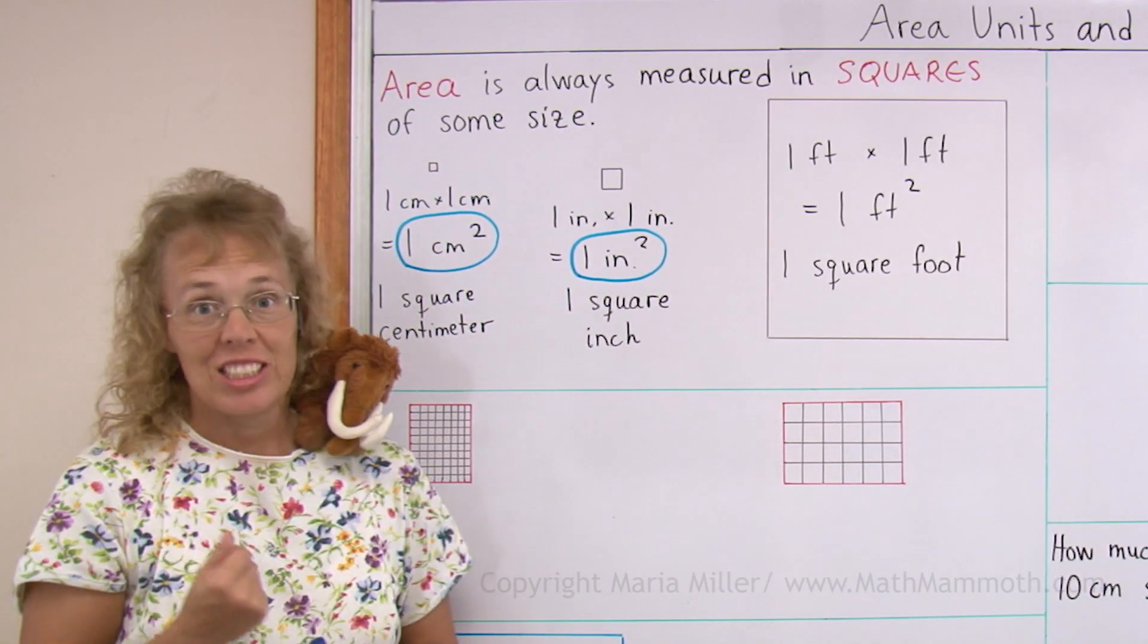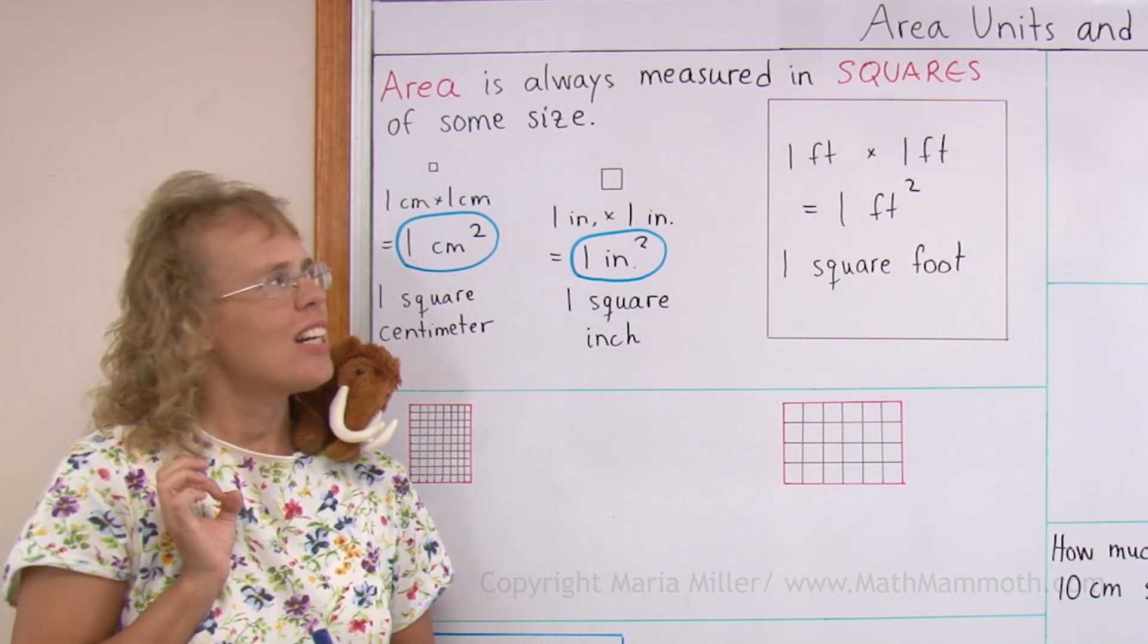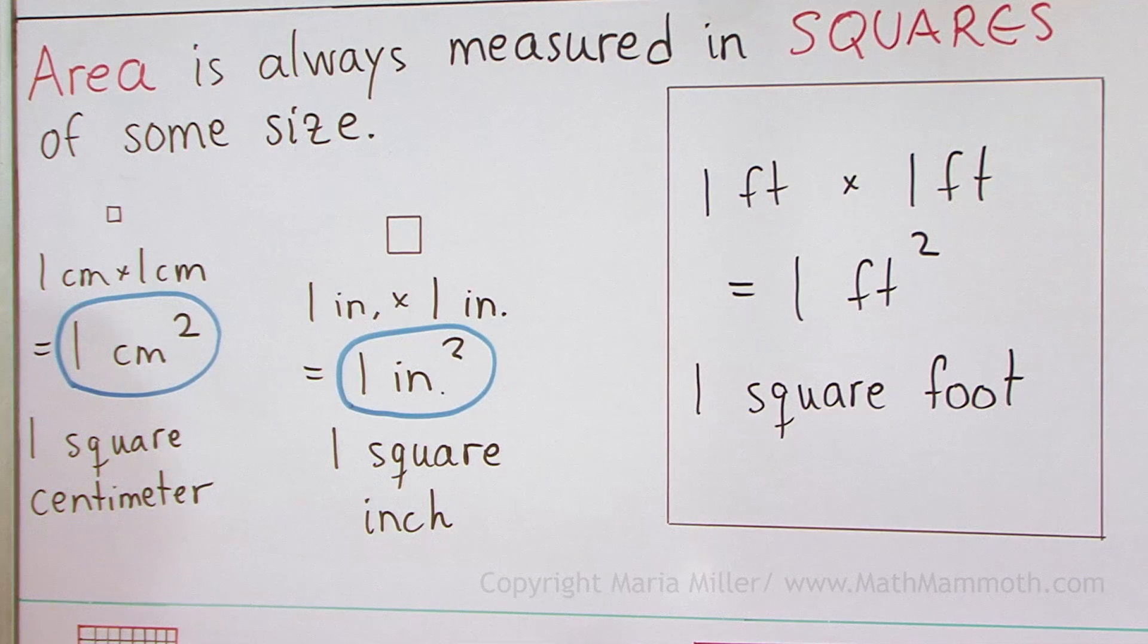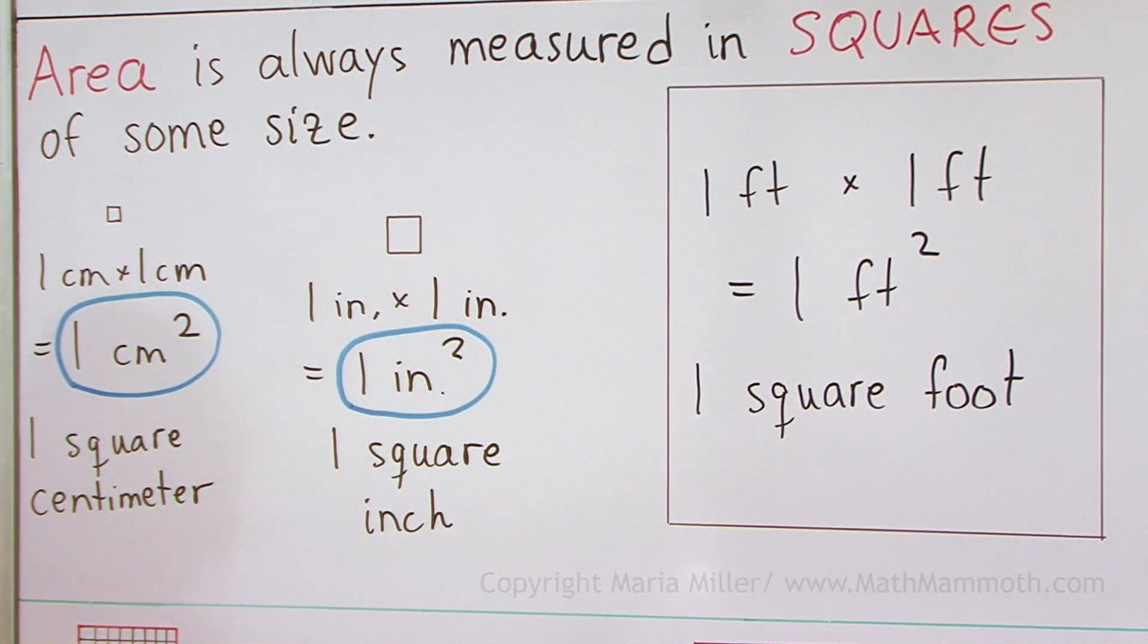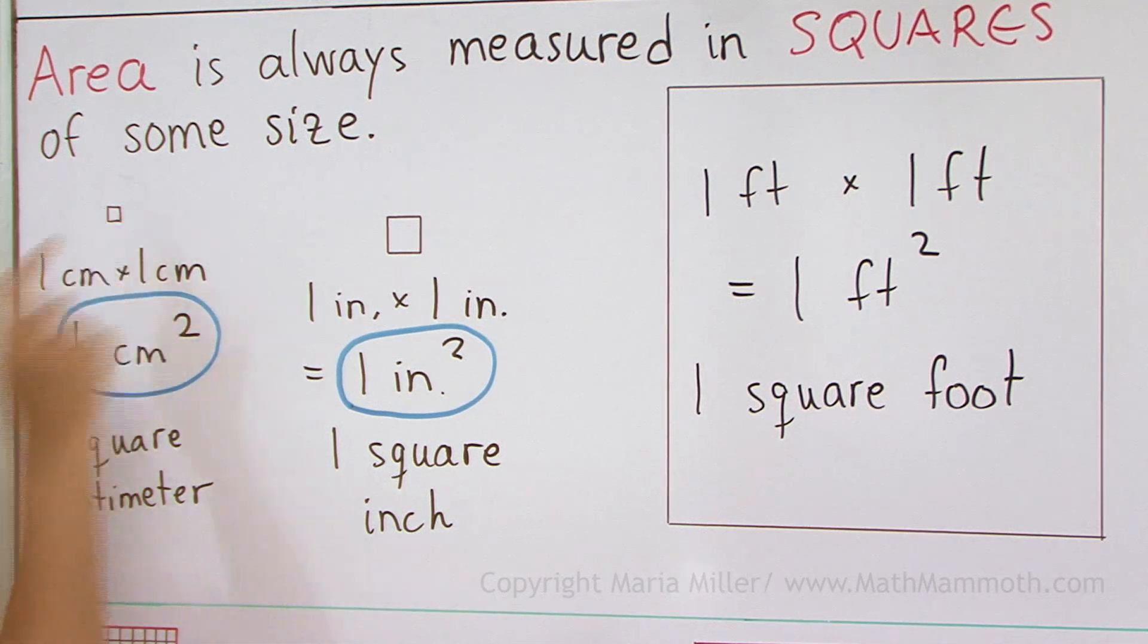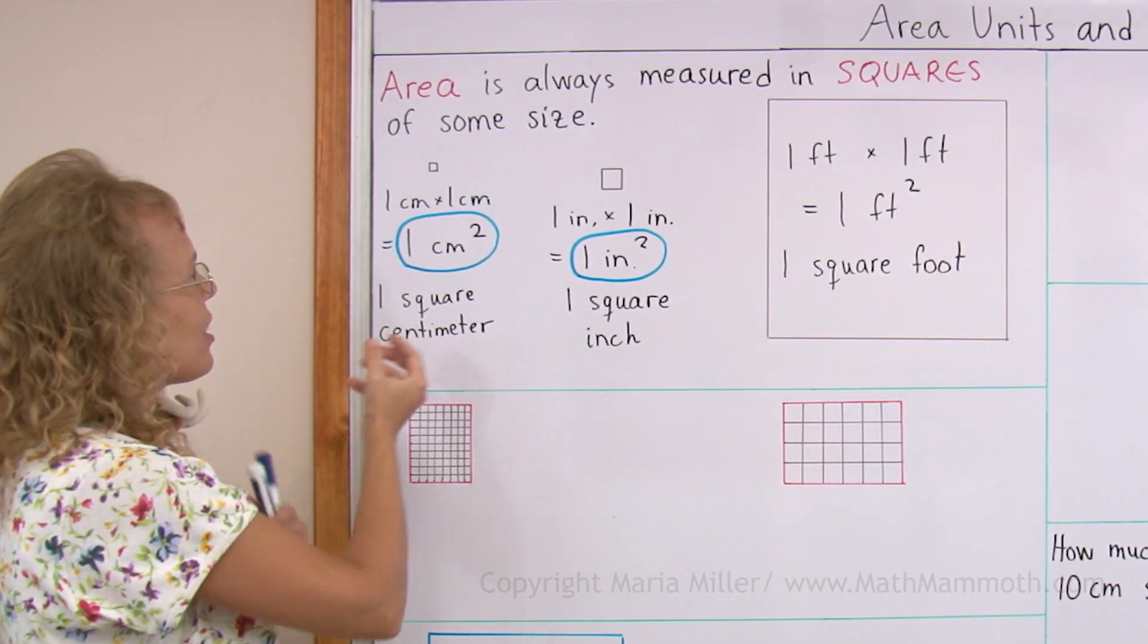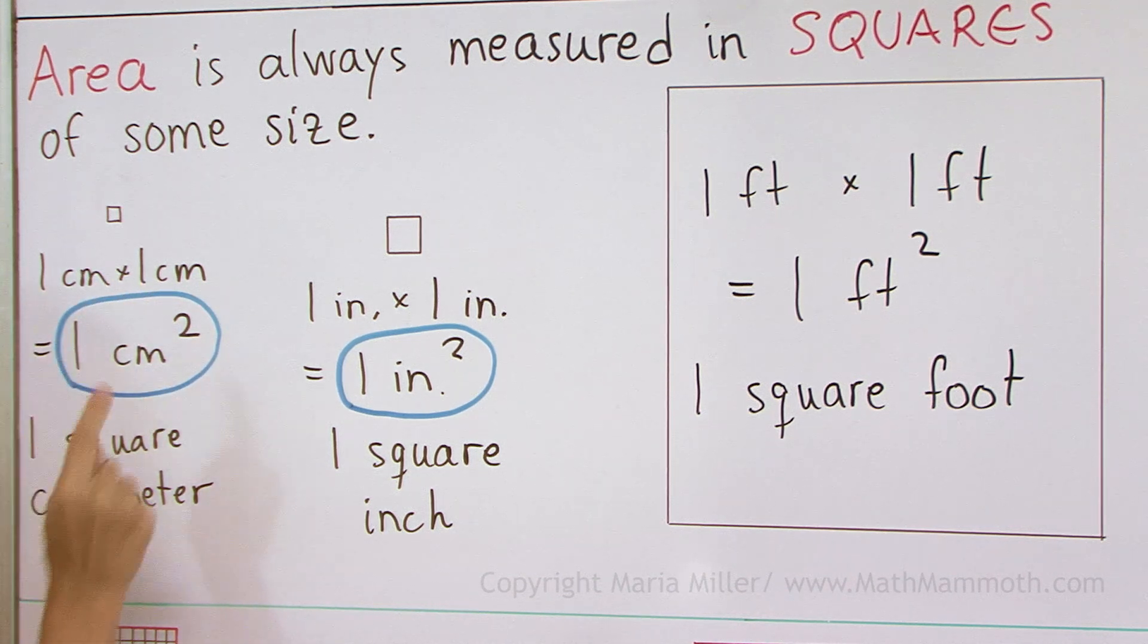Area is always measured in squares of some size. Here I drew some special squares that we often use in measuring area. This first little one is a square centimeter. It means that each side of that square is one centimeter long. So I can find the area by multiplying one side times the other side, and then I get one square centimeter.